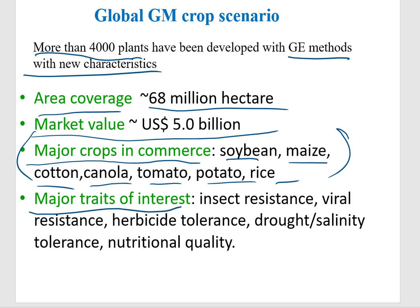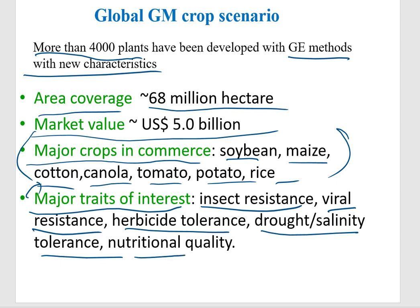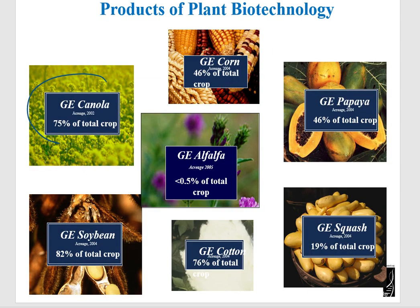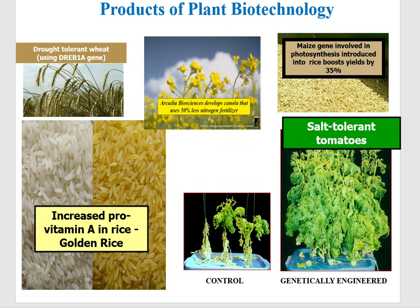The major traits introduced in these crops included: insect resistance, viral resistance, herbicide tolerance, drought and salinity tolerance, and improvement of nutritional qualities. For example, genetically engineered canola constituted 75% of the total crop, and genetically engineered corn was 46% of the total crop. Through genetic engineering we also developed papaya, alfalfa, soybean, cotton, and squash.